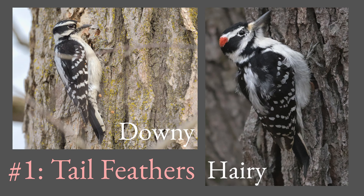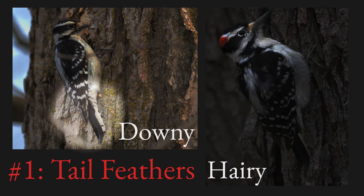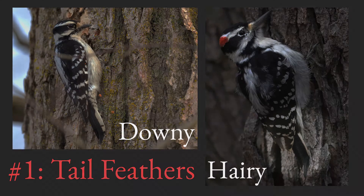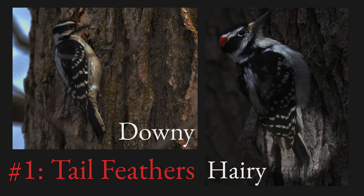There are two really good ways to tell the difference between these two woodpeckers. The first and most obvious is the tail feathers. On the downy woodpecker, the white tail feathers are spotted black, but the hairy woodpecker's tail has no spots on it.